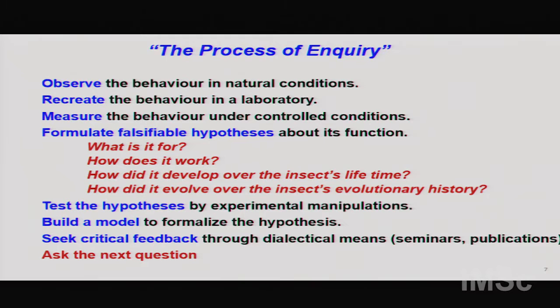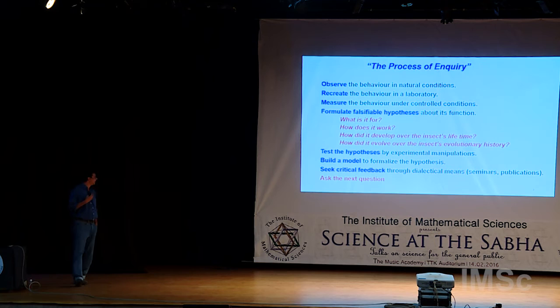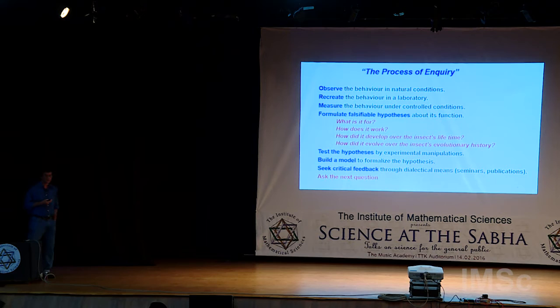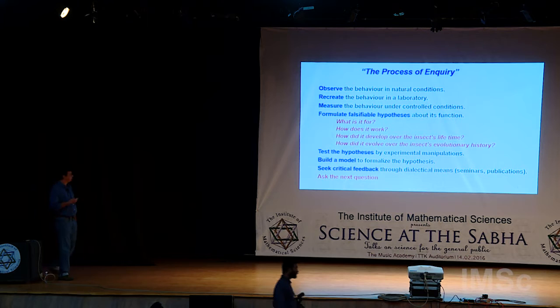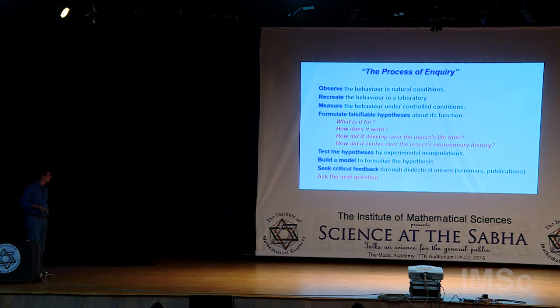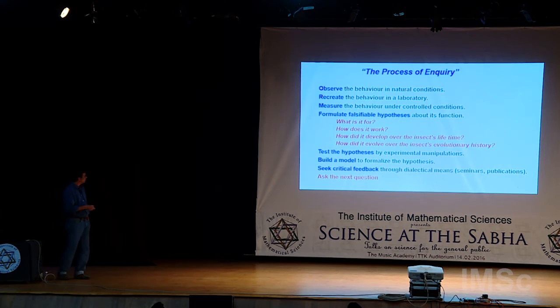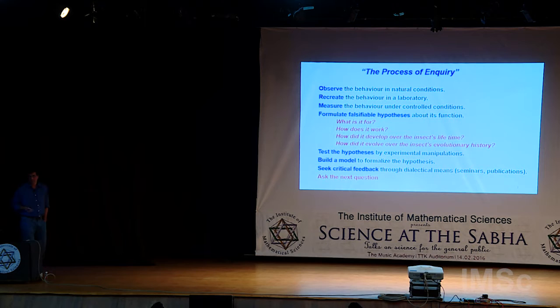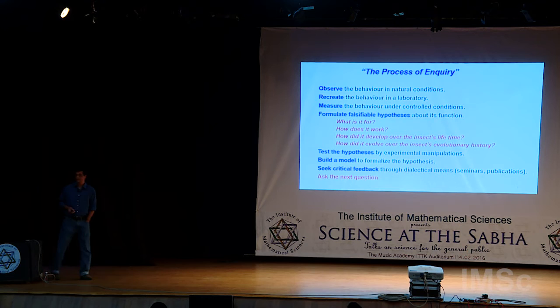Then you test the hypothesis, and once you have some idea of the answer, you start building models — mechanical or mathematical models. Much of what we do now uses control theory, an engineering tool, to address these questions. Then you seek critical feedback through talks and seminars, send out papers requesting criticism, and if it holds up, you have a publication and move to the next question.